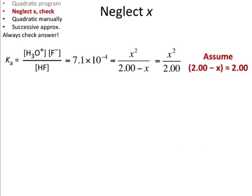So this is what we do. When you do this, you're basically solving 7.1 times 10 to the negative 4th equals x squared divided by 2. You multiply both sides by 2 and then take the square root. And then that gives you this value for x.